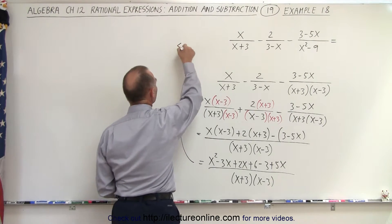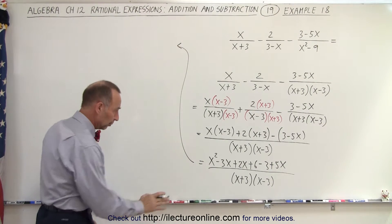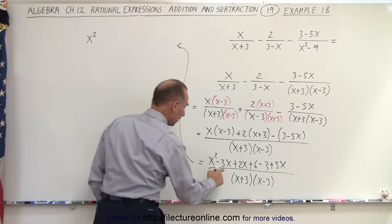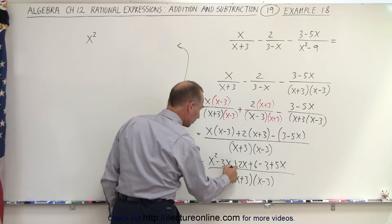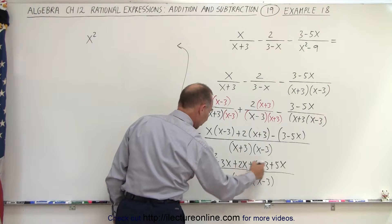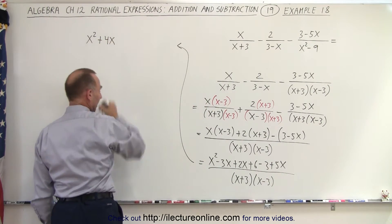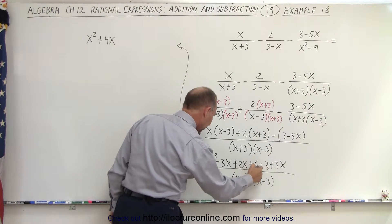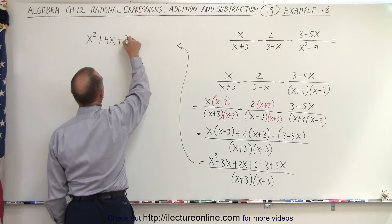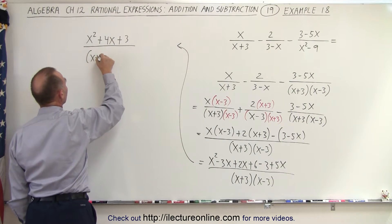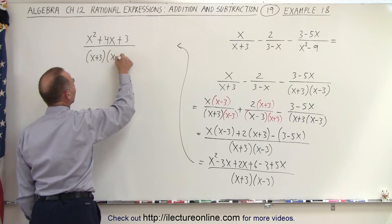And then continuing up here, let's collect all common terms. So we have x squared. Then we have minus 3x plus 2x plus 5x, so that's plus 4x. And the constants have plus 6 and minus 3, that would be plus 3. All divided by x plus 3 times x minus 3.